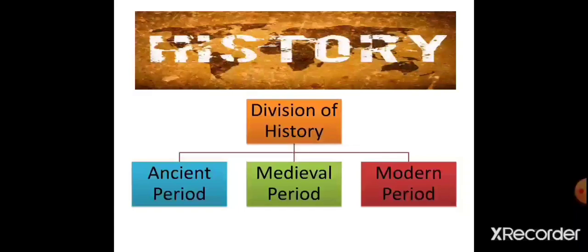Along with this, we are going to study the things which have taken place around the world — whatever events or specific things which have taken place around the world, we are also going to study in the modern period. So we are going to start with the first chapter, that is, the period of transition.